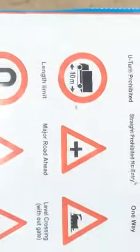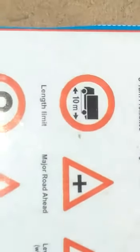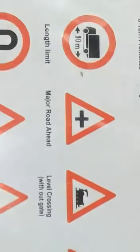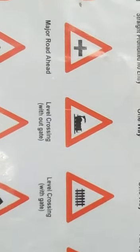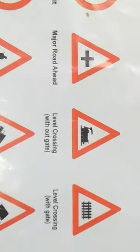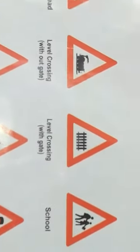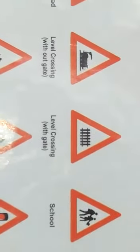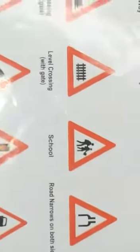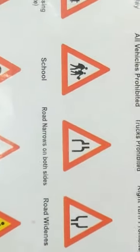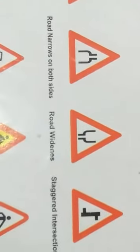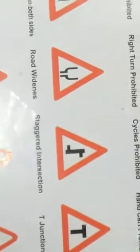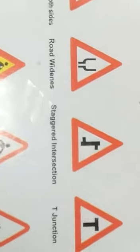And this is left turn prohibited. And this symbol belongs to length limit. And this is major road ahead. And this symbol is level crossing without gate. This is also level crossing with gate. This is school. This is road narrows on both sides. This symbol is road wideness.